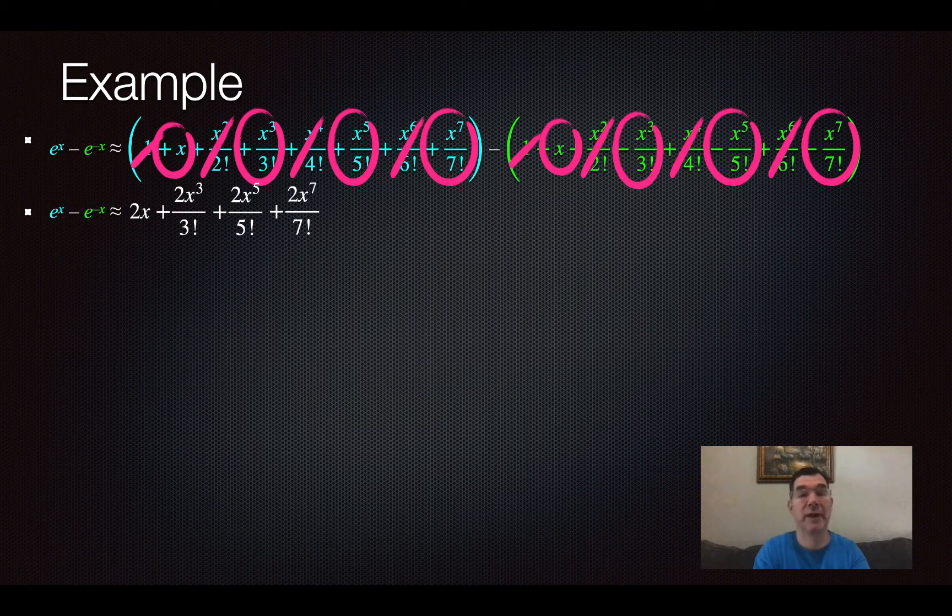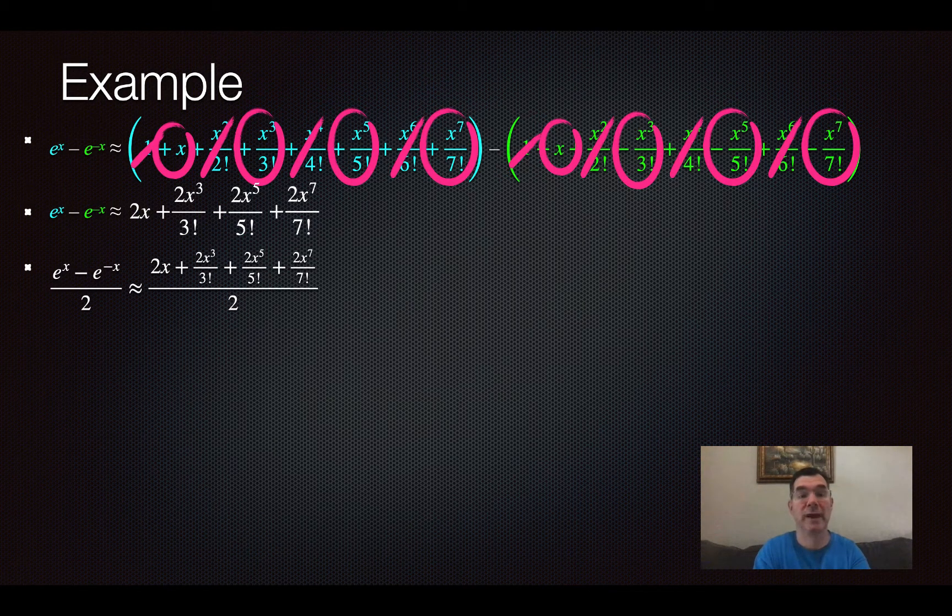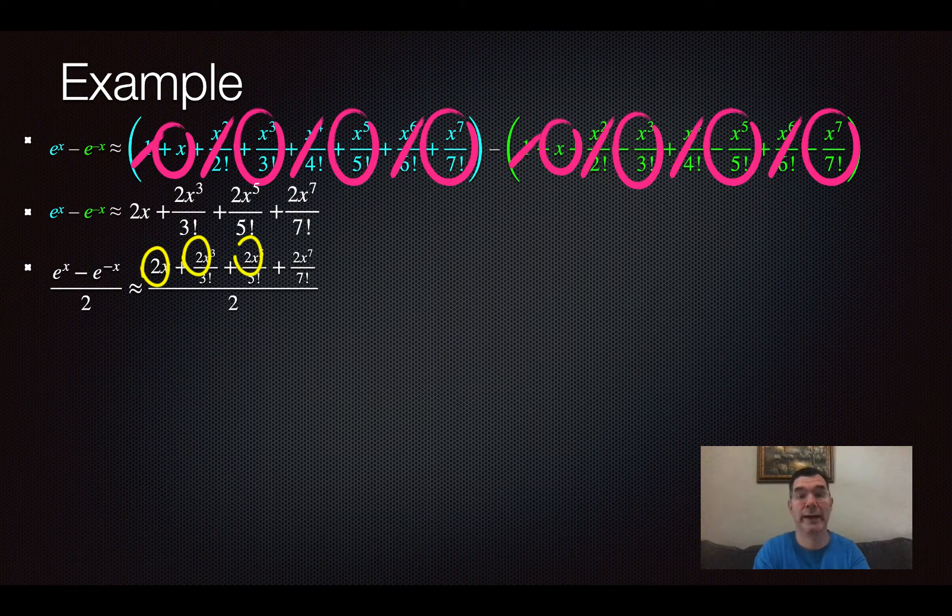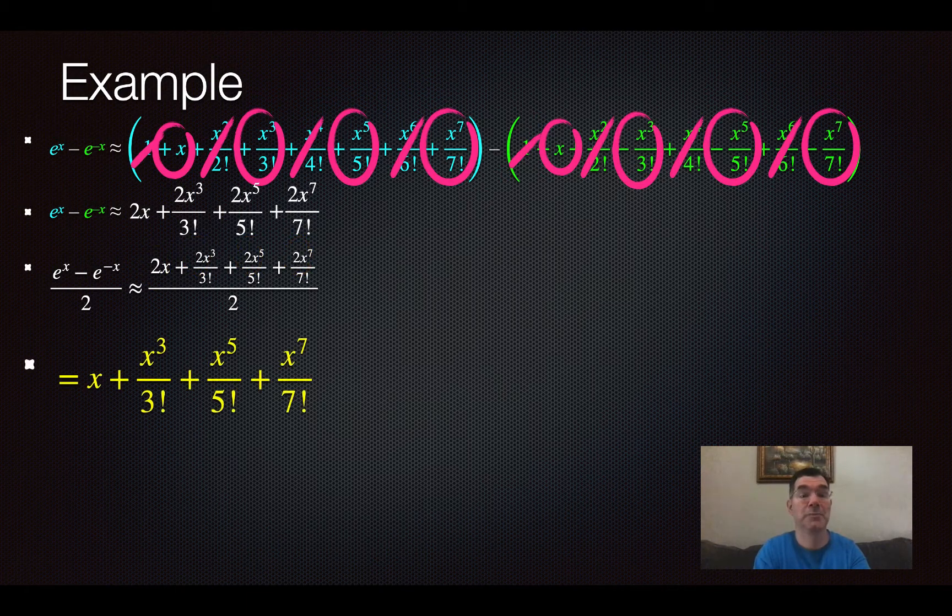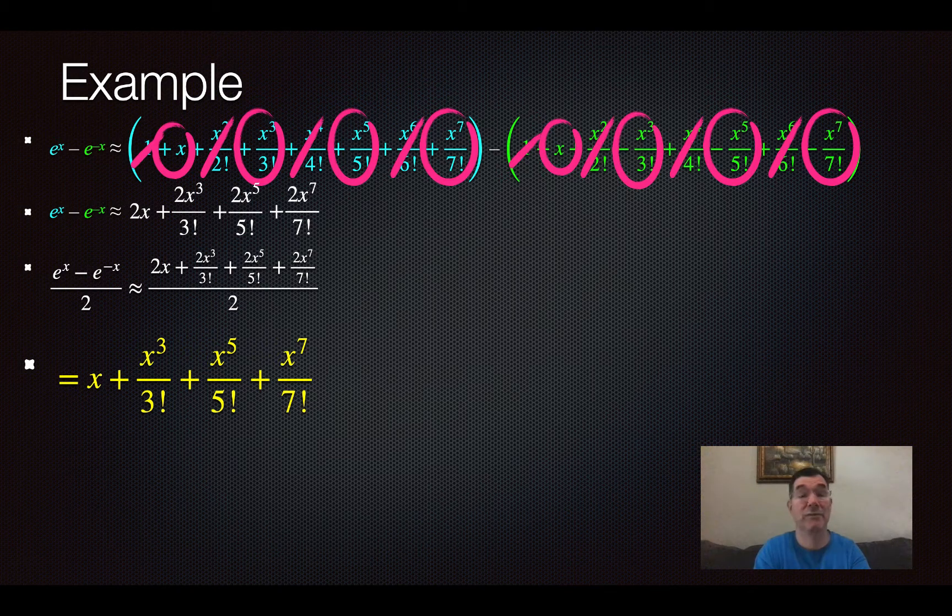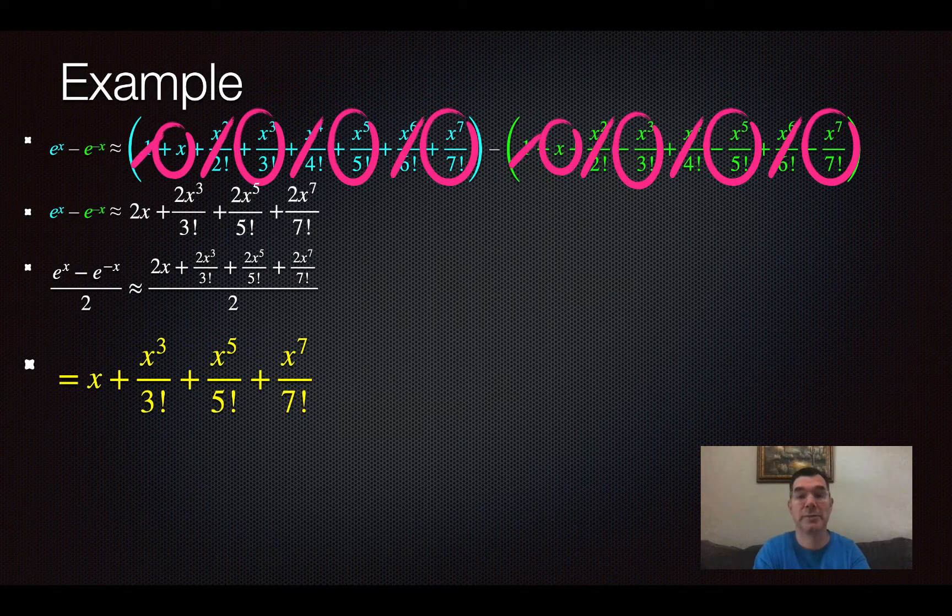But remember, I still haven't divided by 2 to get my final expression. So when I divide by 2, all of that goes over 2. Notice how every term in the numerator on the right-hand side does have a 2 in it. So basically, I'm just going to divide those two out. And I will get that e to the x minus e to the negative x over 2 is approximately x plus x to the third over 3 factorial plus x to the fifth over 5 factorial plus x to the 7 over 7 factorial. So for x's that are close to 0, this polynomial will approximate values of x that are close to x equals 0.